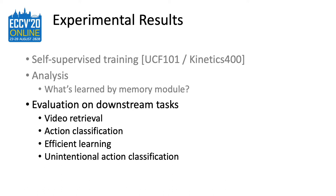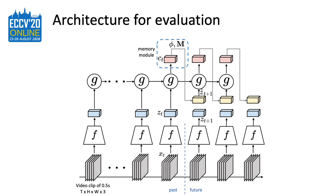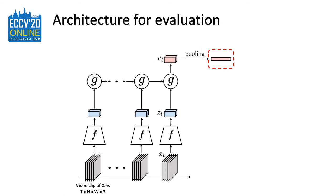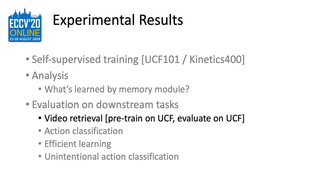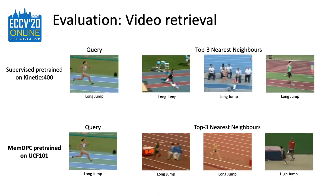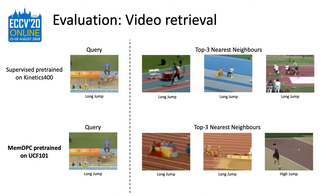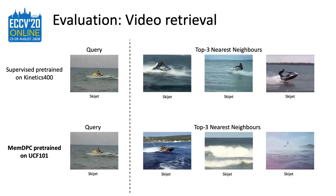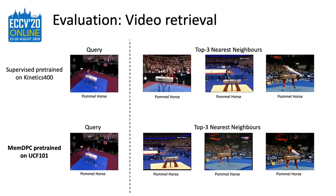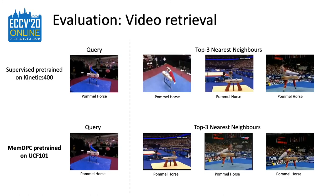In the next few slides, I will show our performance on downstream tasks, starting by explaining which feature we use. We remove the memory module and the future prediction pipeline, take the context representation CT, and average-pool it into a vector for evaluation. For video retrieval, we show a model pre-trained on UCF101 without any labels and evaluated for video retrieval on UCF101. We use testing set videos to retrieve training set videos, and we compare our method with a network trained with supervised learning on Kinetics400. As you can see, the representation learned from self-supervised training is also capable of retrieving correct actions.